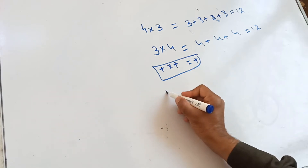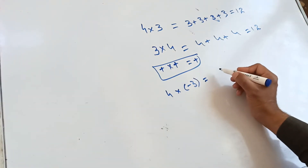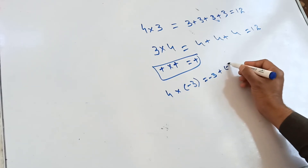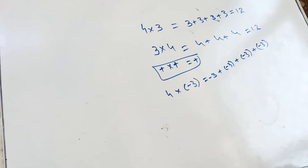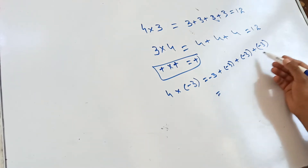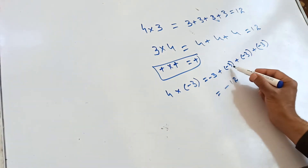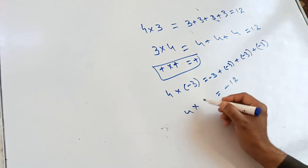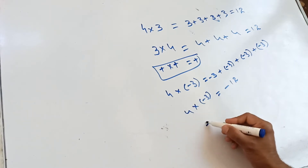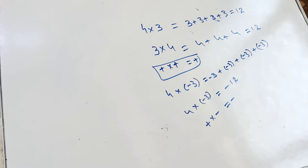Now, if we take 4 multiplied by minus 3, what does it mean? It means minus 3 is added 4 times: minus 3 plus minus 3 plus minus 3 plus minus 3. By the addition rule: minus 3 minus 3 is minus 6, minus 3 is minus 9, minus 3 is minus 12. So we get minus 12. We multiplied a positive number by a negative, and we get a negative number. So plus times minus is equal to minus.